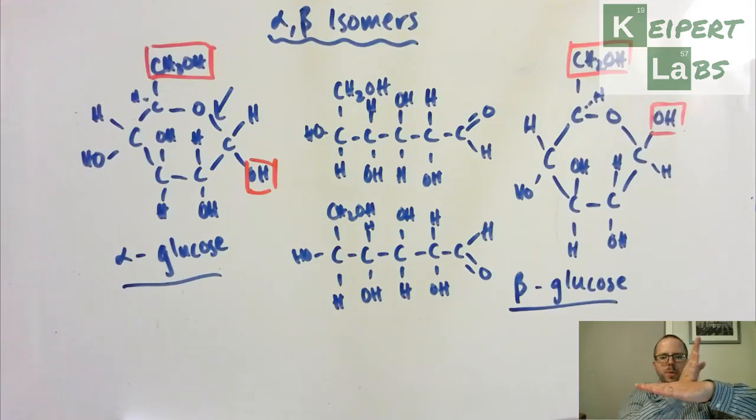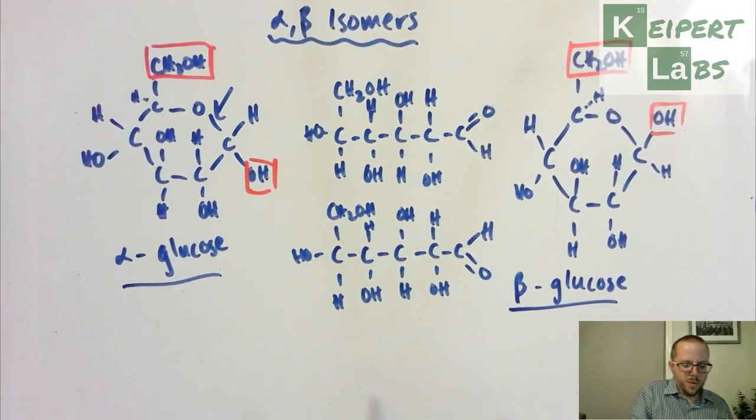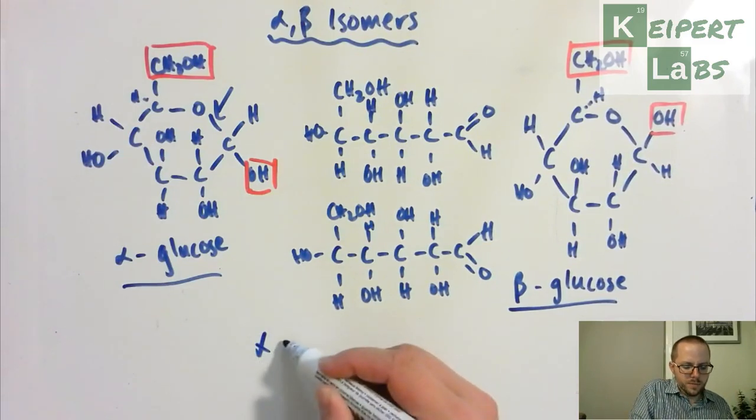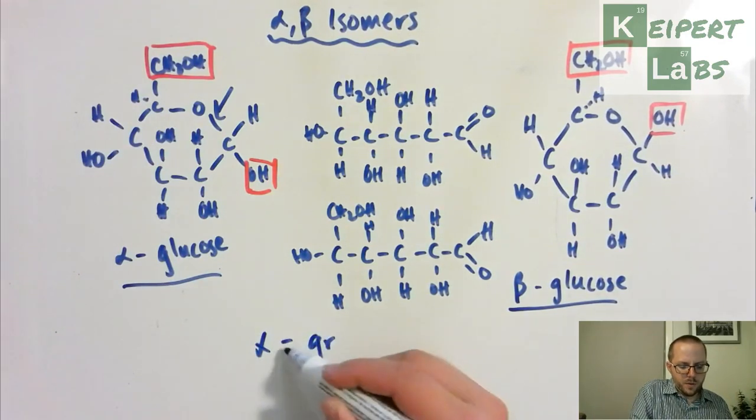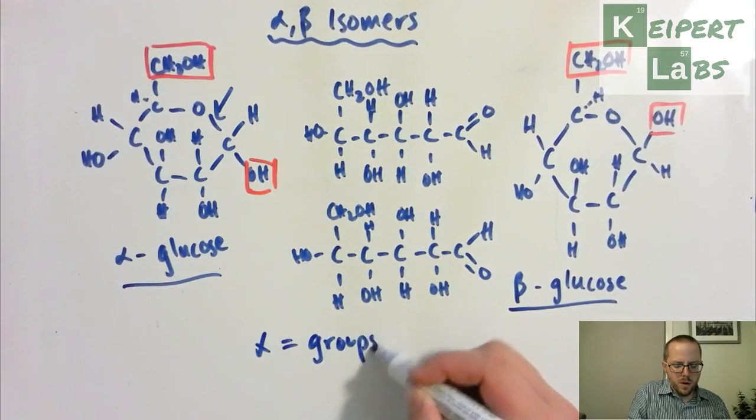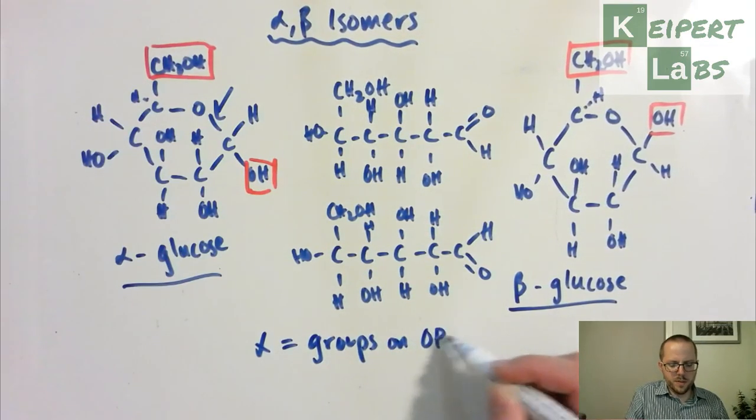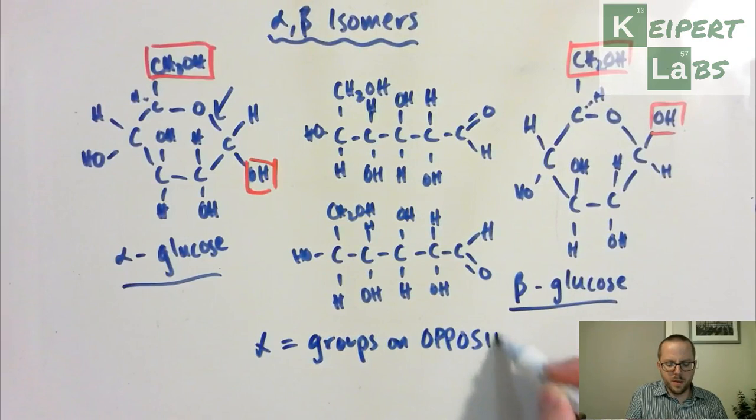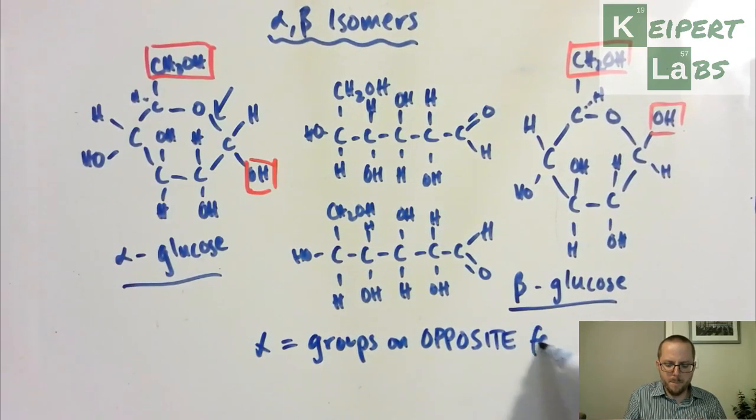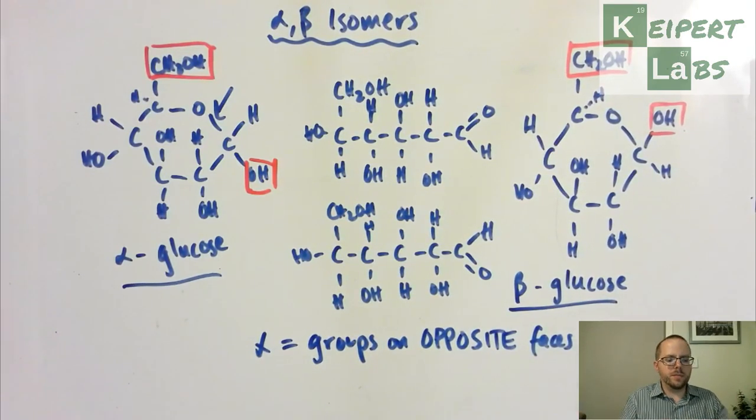And then the OH group then is actually kind of sticking down like that. So you've kind of got something pointing up and something pointing down when you make a model like this. So, what we say is alpha has the groups on opposite sides, opposite faces, I might say, of the ring. So that it's kind of one is pointing up above the ring and the other one's pointing down.